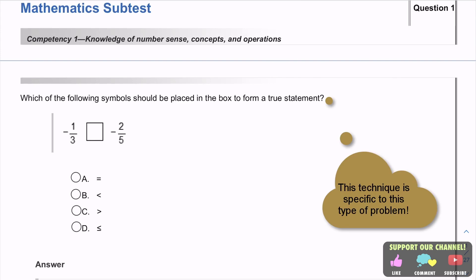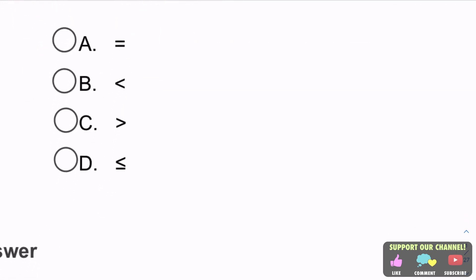From the Florida State website, here we are. Competency 1, question 1. Which of the following symbols should be placed in the box to form a true statement? Now, here's what I'm going to do. I am seriously going to just not even show these numbers. Don't even worry about them.